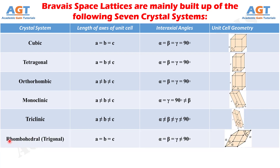The sixth crystal system is the rhombohedral or trigonal system. In Bravais lattices with rhombohedral or trigonal systems, the lengths of axes A, B, and C of the unit cell are equal to one another. Their corresponding angles alpha, beta, and gamma are also equal to one another, but none of these three interaxial corresponding angles are equal to 90 degrees, as we can see in an example of rhombohedral or trigonal system in this figure.